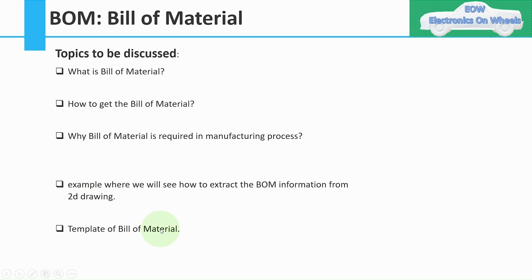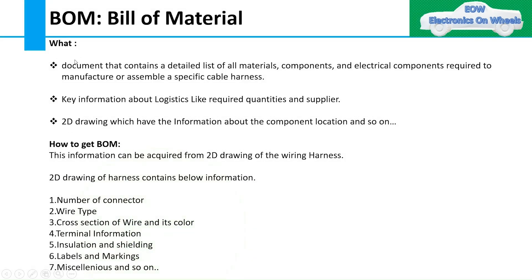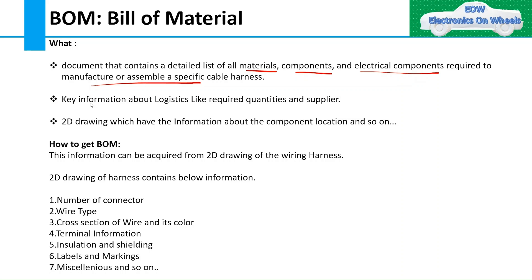Starting with what is bill of material? The bill of materials, or BOM, for a wiring harness is a document that contains a detailed list of all materials, components, and electrical components required to manufacture or assemble a specific cable harness. The production BOM also contains key information about logistics, like required quantities and suppliers. It also contains references to the technical drawing of the wiring harness, indicating where each component is used.